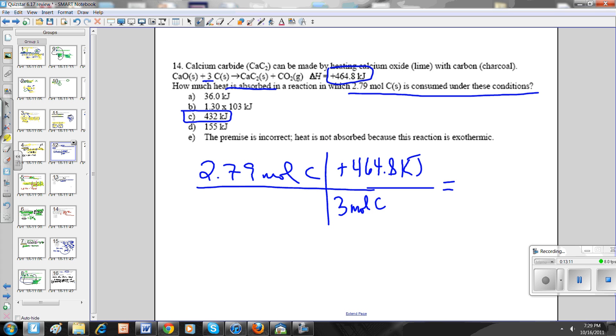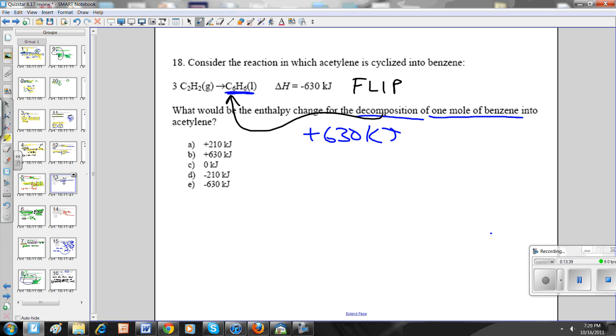Next one. Same idea as the previous one. Heat is a conversion factor so they give me 2.79 moles of carbon. I drop that, that's my given. If you look the coefficient of carbon is three, that's how much heat. So you come up with a conversion factor for every three moles of carbon. It equals positive 464.8 kilojoules. Little bit of calculations and you get your answer. Simple heat stoichiometry.